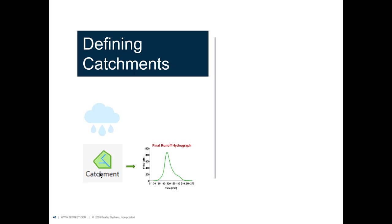Anytime I say basin, subcatchment, watershed, or drainage area, I am talking about catchments. It's simply the area of land where precipitation is received and some of it gets infiltrated or collects in ponds, and then another portion runs off to the lowest point or the outlet.